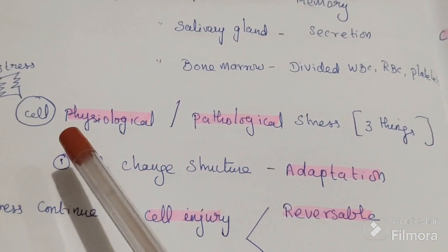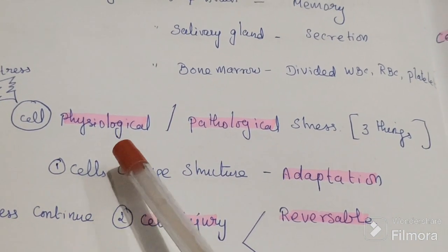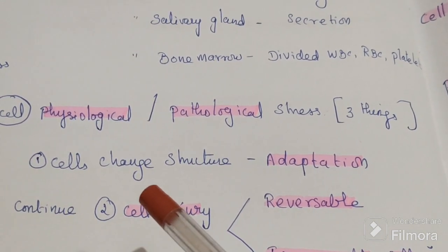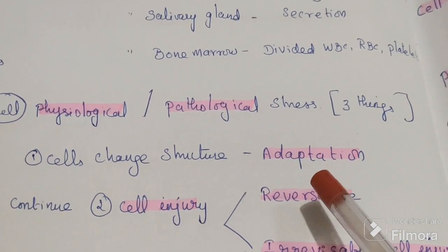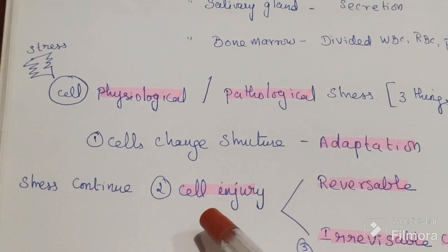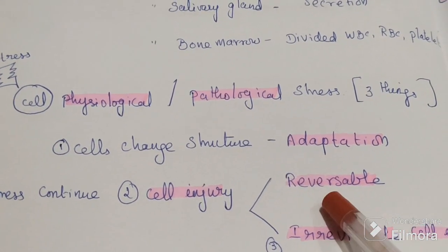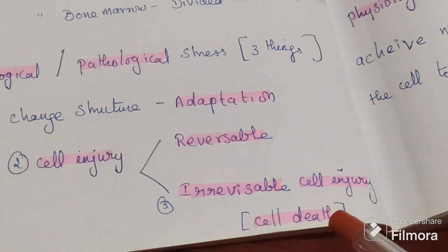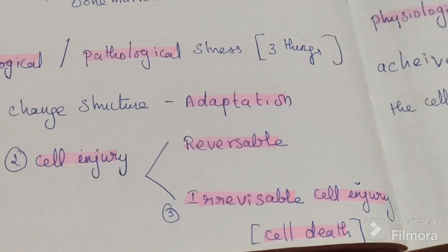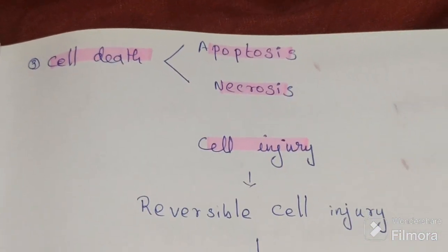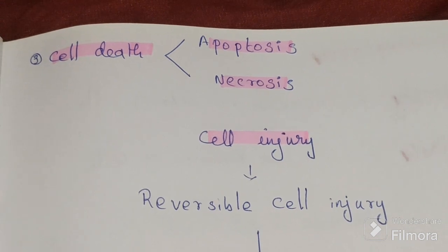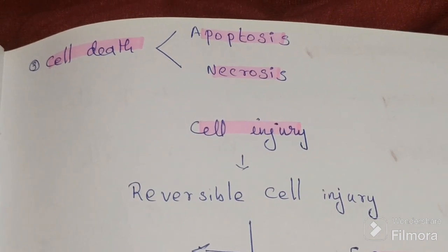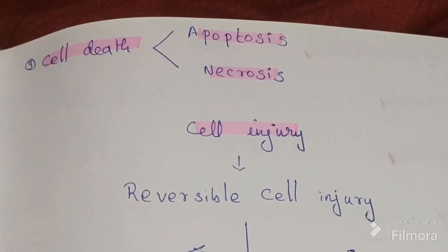Whenever stress comes to a cell, whether physiological or pathological, the cell first undergoes adaptation for survival. If stress continues, cell injury occurs — reversible injury first. If stress still continues, irreversible cell injury takes place, which is also called cell death. There are two types of cell death: apoptosis and necrosis.